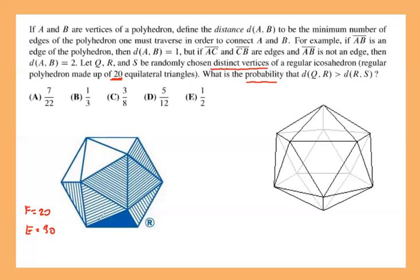I'm noting this because problem 18 was asking us to use Euler's polyhedron formula, which relates faces, vertices, and edges. A good way to remember it is to start with a smaller case like a cube or rectangular prism, count faces, vertices, and edges, and find the relation. That formula is: number of faces plus number of vertices minus number of edges equals two.